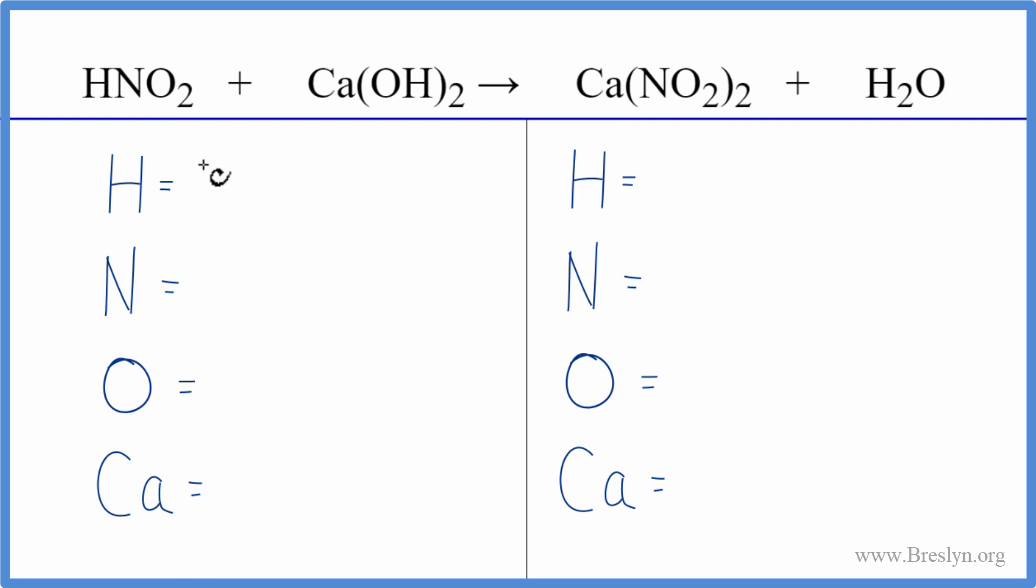We have one hydrogen plus we have this one hydrogen here times the two. So we have two more. Gives us three hydrogens, one nitrogen, two oxygens, plus we have two times the one. That gives us two more. So four oxygen atoms and then one calcium.